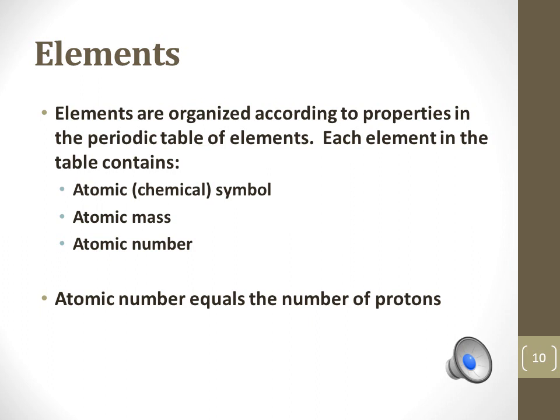The atomic symbol is unique to each type of element. The atomic mass is the number of protons and neutrons. The atomic number is the number of protons, which is always the same for every type of element.